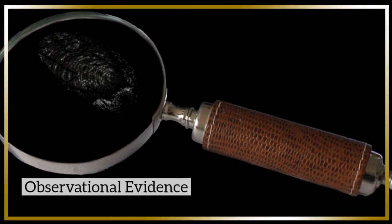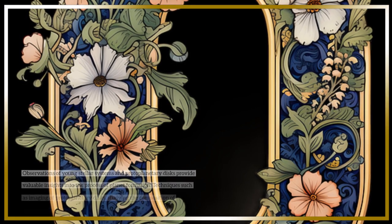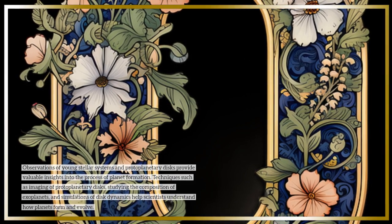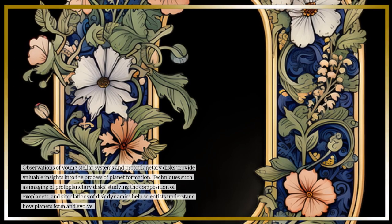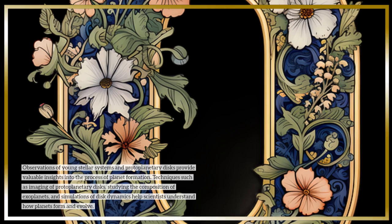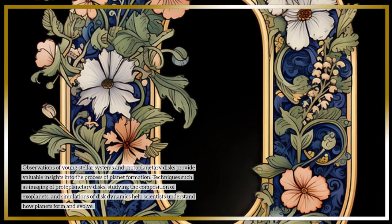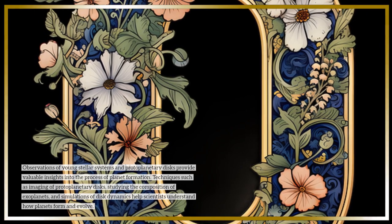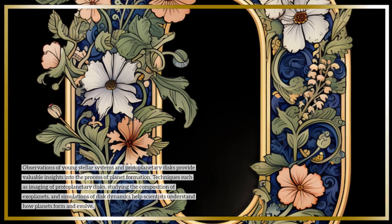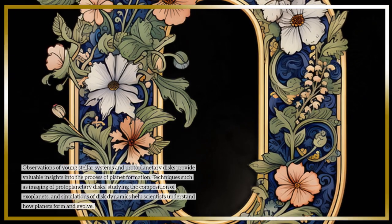Observational evidence. Observations of young stellar systems and protoplanetary disks provide valuable insights into the process of planet formation. Techniques such as imaging of protoplanetary disks, studying the composition of exoplanets, and simulations of disk dynamics help scientists understand how planets form and evolve.